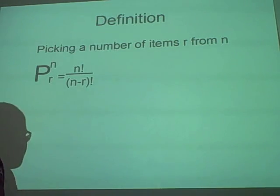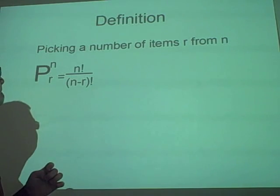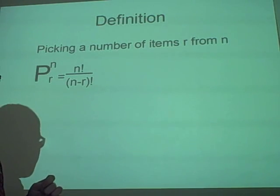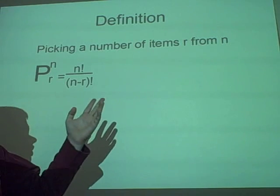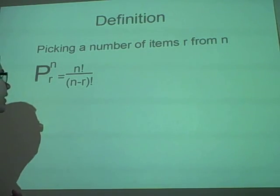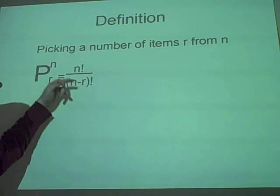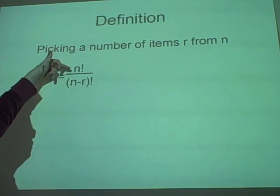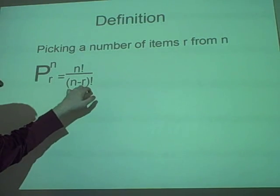Right, another definition. This is for picking. Picking a number of items r from a total number of items n. So, the formula for this is n factorial over n minus r factorial.